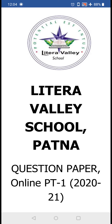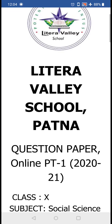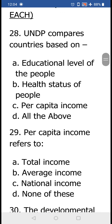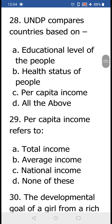Let us begin. The first question of economics was question number 28: UNDP compares countries based on (a) educational level of the people, (b) health status of people, (c) per capita income, and (d) all the above. You have already studied that UNDP uses three criteria to compare countries — educational level, health status, and per capita income — so the answer is (d) all the above.